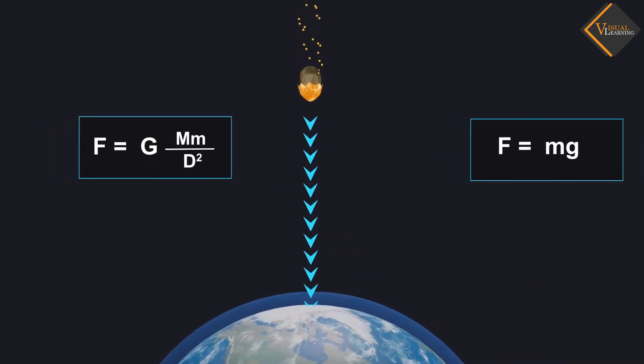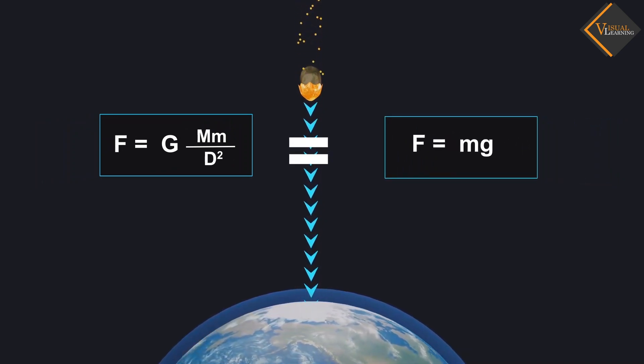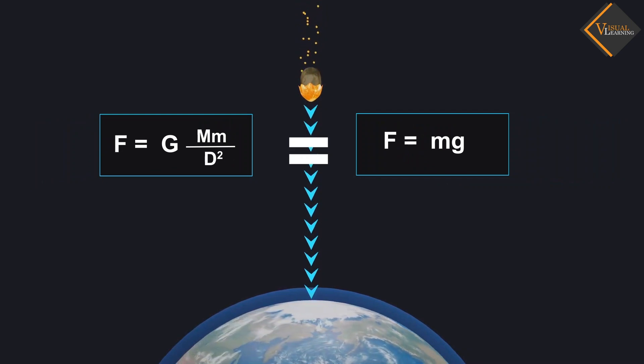Therefore, the magnitude of the gravitational force F will be equal to the product of mass and acceleration due to the gravitational force.